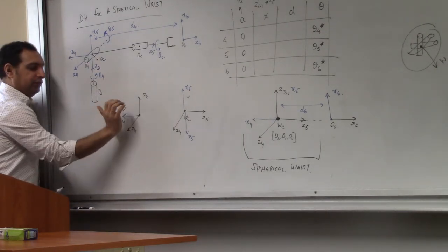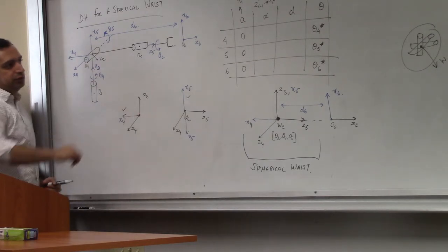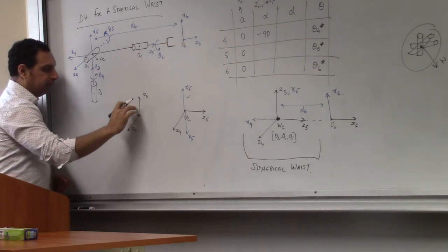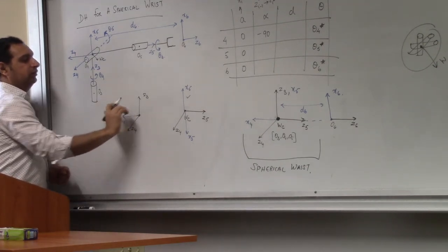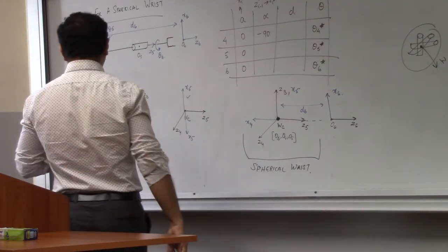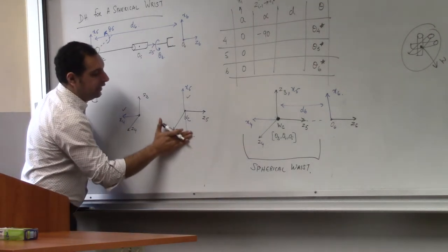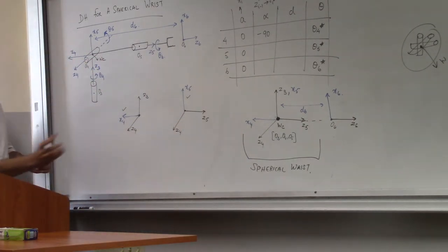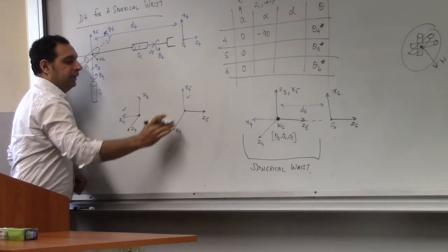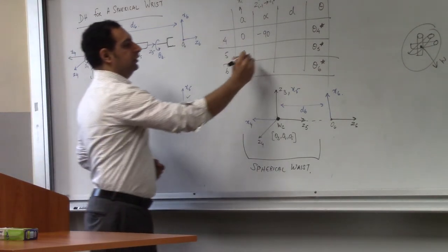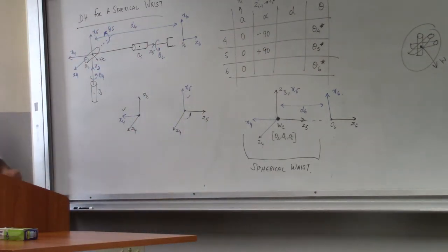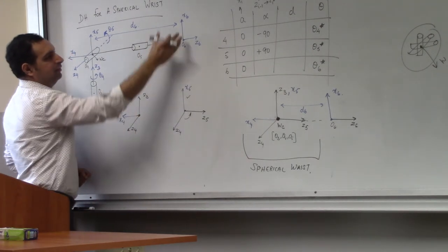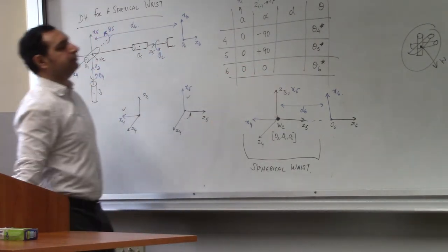Now let's do alpha: alpha is the angle between z_{i-1} and z_i measured about x_i. The first angle is about x4, between z3 and z4. Z3 is vertical, z4 is outside the board. This is measured about x4 — it's minus 90 degrees because you're moving in that direction, or equivalently 270 degrees. For alpha about x5 — you're measuring z4 to z5 — that is plus 90 degrees. And z5 and z6 are parallel, so alpha for that is zero.